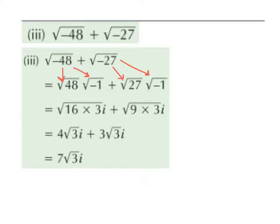27 we specifically want to break down with a square number, which we put first, and 9 is a square number because 3 times 3 is 9. Now, the square root of 16 is 4. The square root of 3 just stays as the square root of 3 — we cannot break that down anymore. And i stays as i.